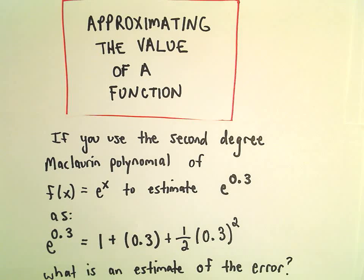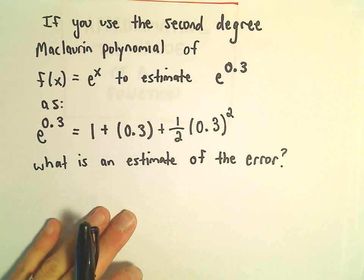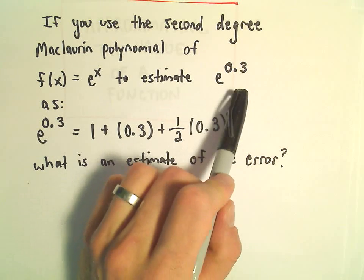Okay, here we're going to look at approximating the value of a function. So suppose we use a second degree Maclaurin polynomial of the function e to the x to estimate e to the 0.3.